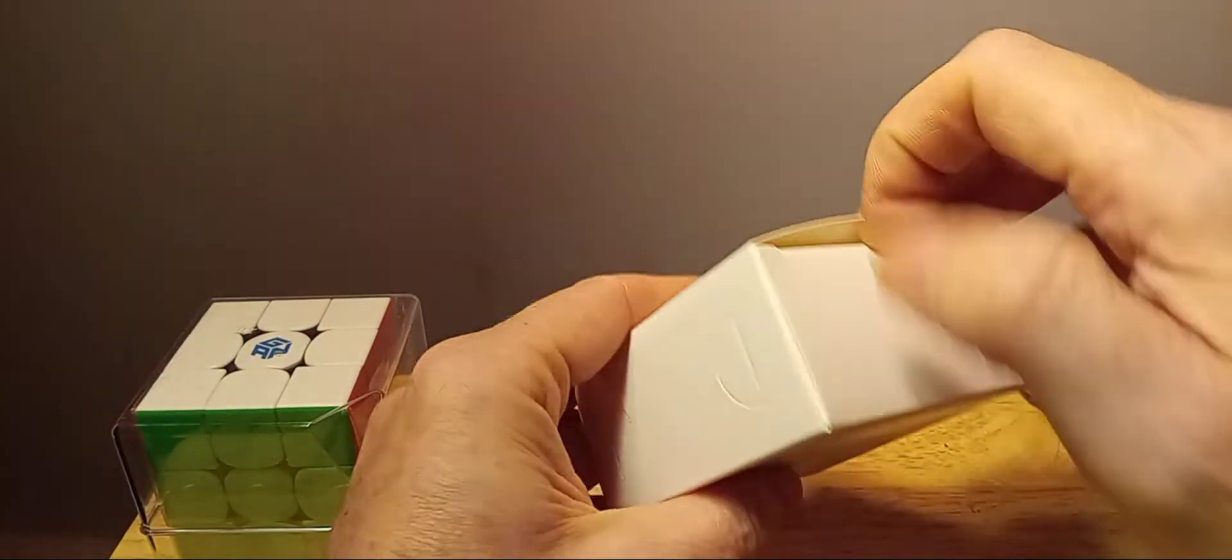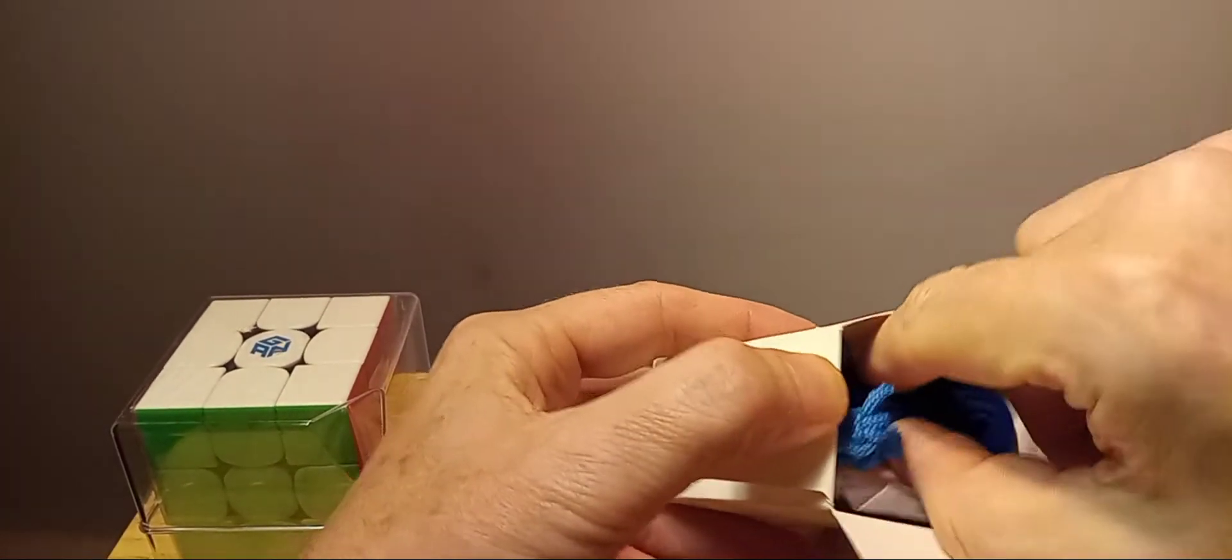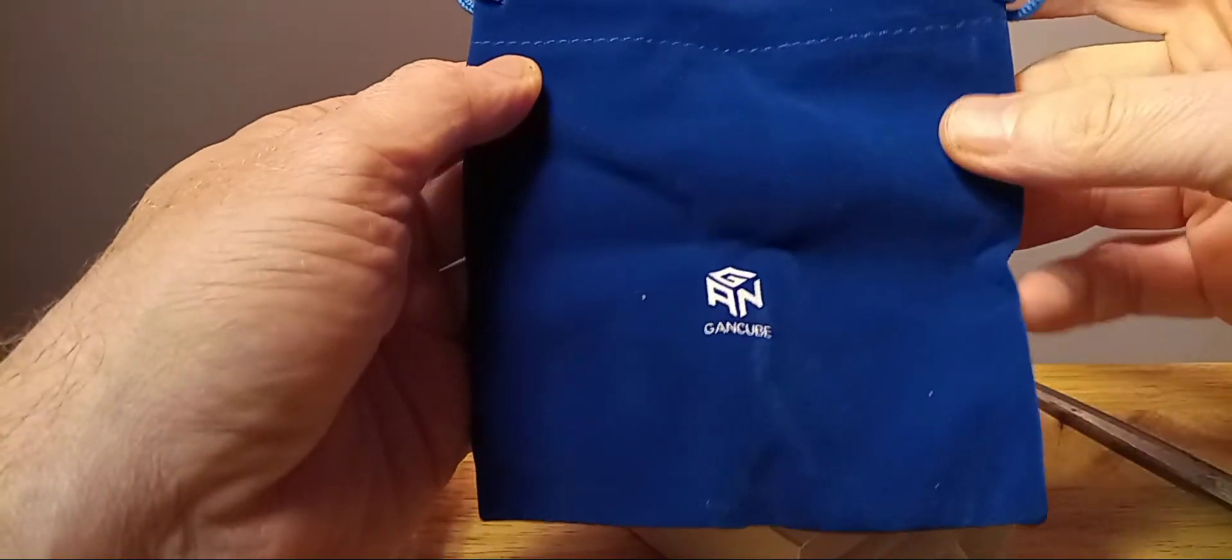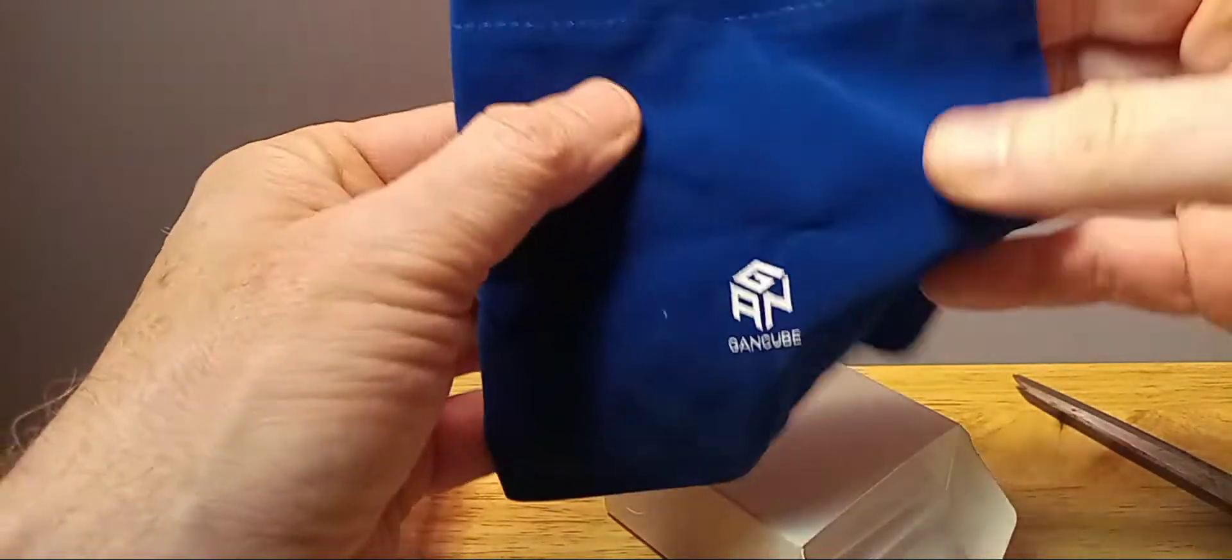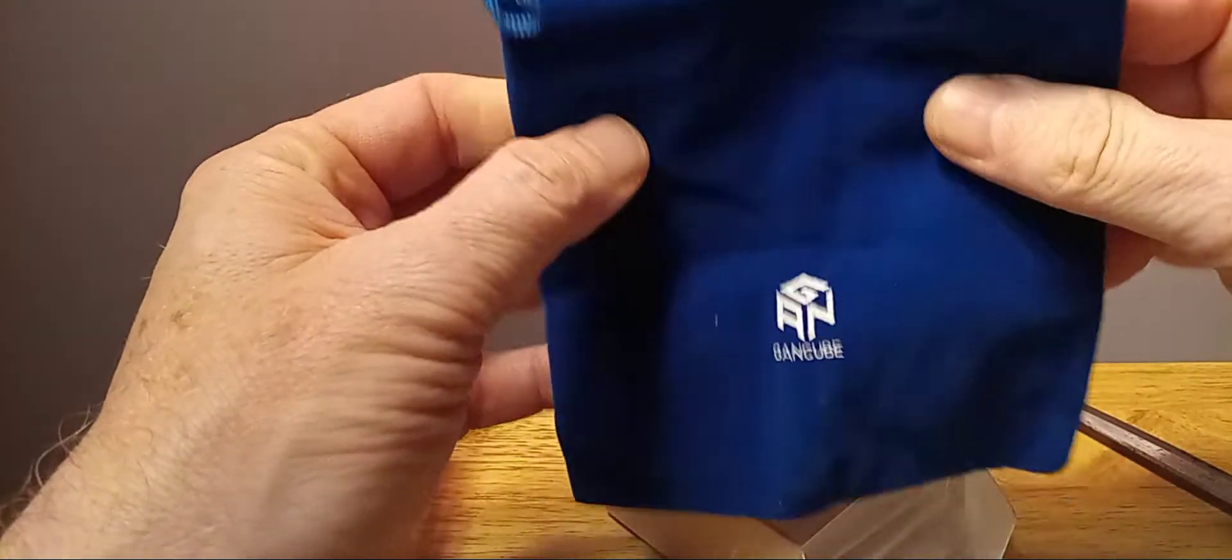So they give you a little box here, maybe it's some accessories. Let's see what they give you. Oh, they give you a really nice GAN bag. This is really nice. I don't know what kind of material it is, but it's really nice. Put your cube in, whatever you like to do with that.